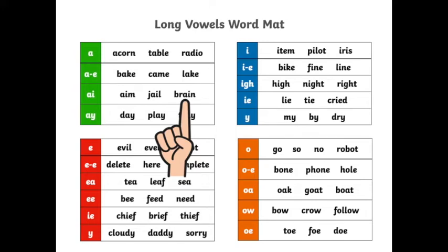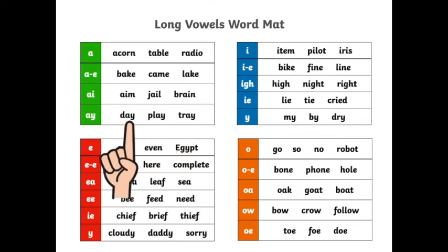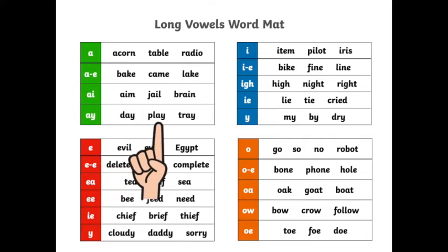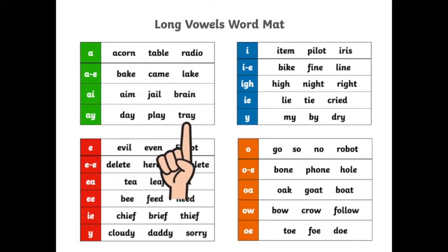Let's go down to the next row. A-K: Day. A-K: Play. Tr-A: Tray. Very good. So all of these words have different ways of making an A sound.